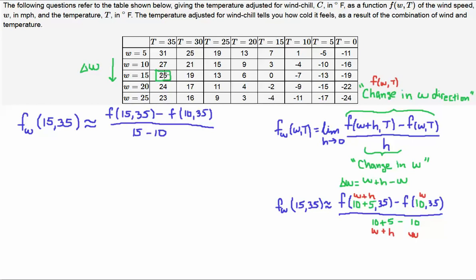Now, f of 15,35 is right here and then we're looking at the change in the w direction. So, we subtract the one right before it, that's f of 10,35, and then we put that over the change in w in that direction, which is 15 minus 10.